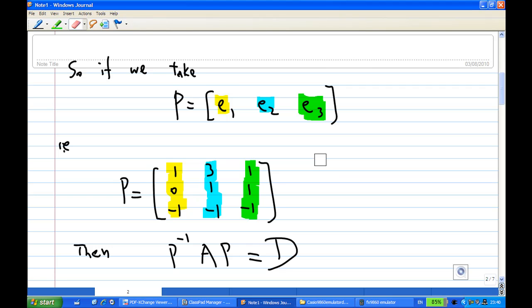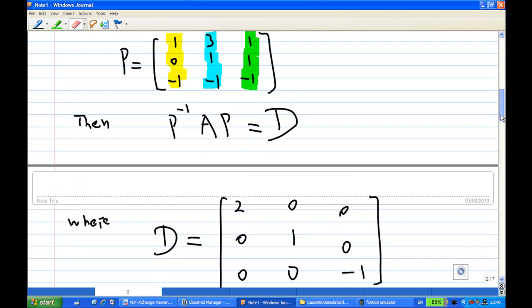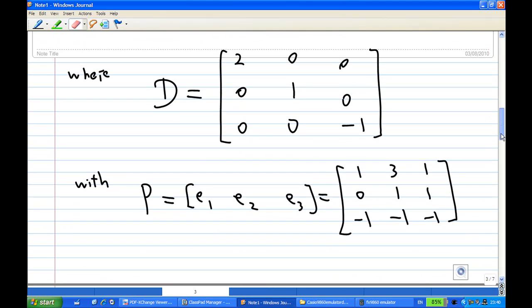Then P inverse AP will be equal to D where D is diagonal now. In this case, what is D? D is equal to 2, 1, minus 1, where 2 is the eigenvalue for E1, which is the eigenvalue for 1, 0, minus 1.